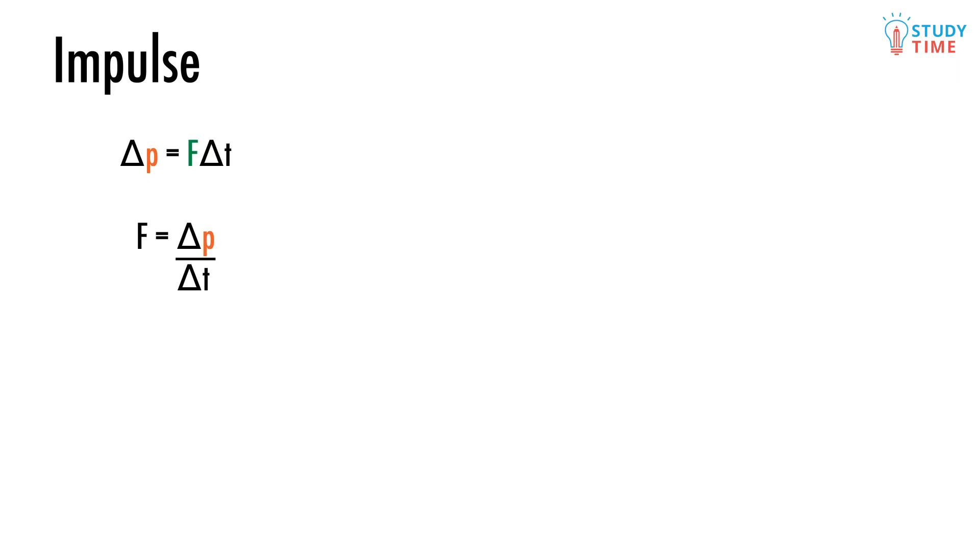Basically, the faster something can slow down or speed up, as in change its momentum, the more impulse it has. So why did we bother talking to you about forces? Well, because the impulse of an object will always be proportional to the force that was needed to speed it up or slow it down.